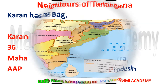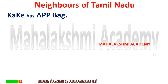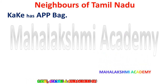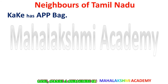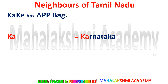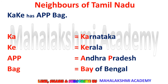Now let's look at the neighbors of Tamil Nadu. We can learn them with the trick: 'Kaki has aap bag.' The AAP party provided a bag to Kaki. K is for Karnataka, K is for Kerala, Aap is for Andhra Pradesh, and Bag is for Bay of Bengal. The Bay of Bengal also shares the coastal area with Tamil Nadu.